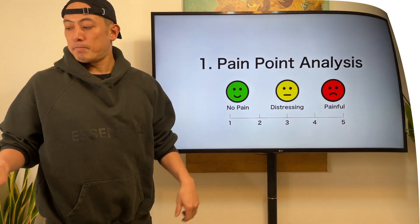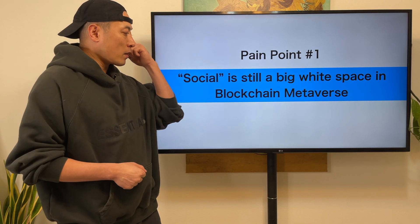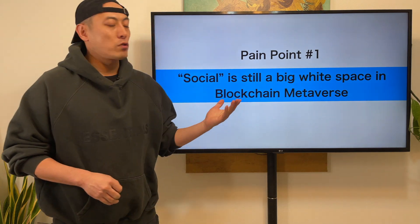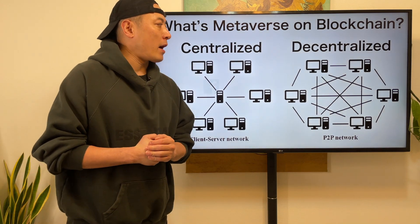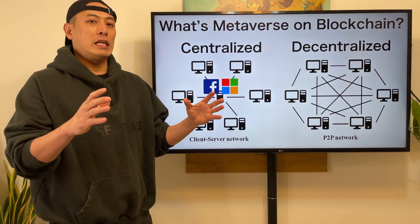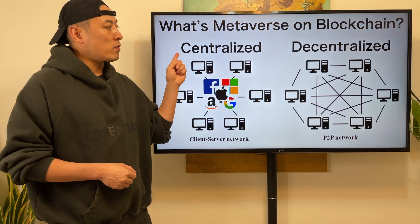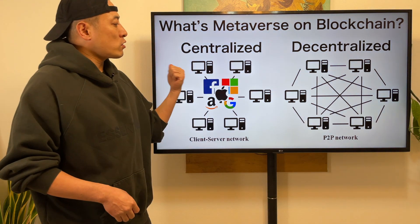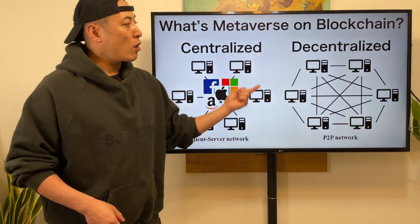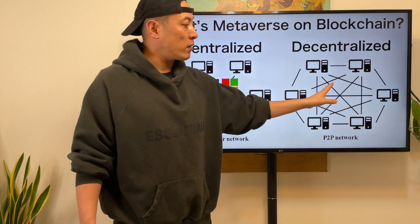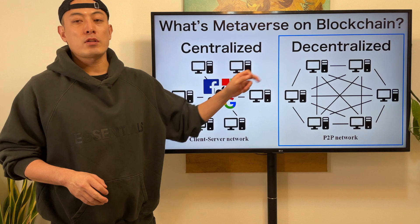Let's start with pain point analysis. There are mainly two pain points. The first one: social is still the big white space in the blockchain metaverse. We have to think about the high potential opportunity in the metaverse economy. We may have two directions: centralized metaverse and decentralized metaverse. In the centralized metaverse, every single tech giant controls everything.